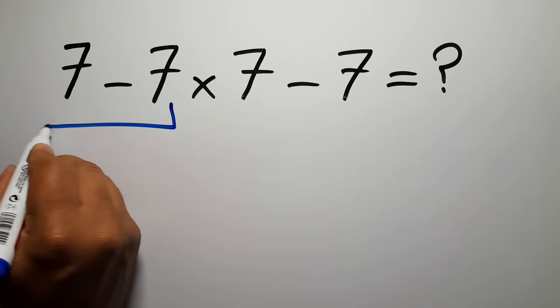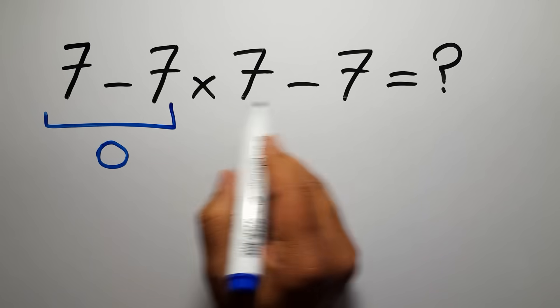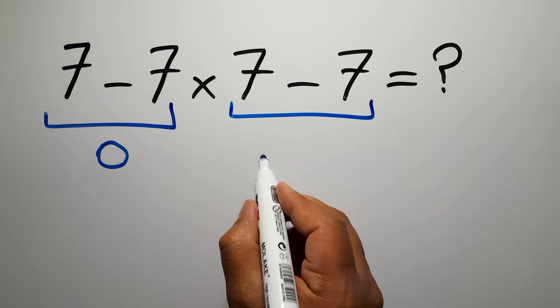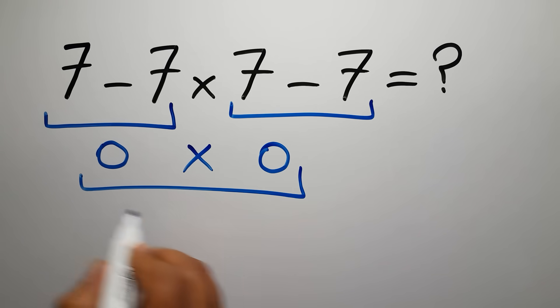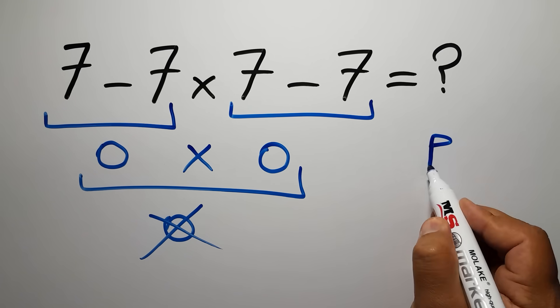7 minus 7 is just 0, and again here we have 7 minus 7, so 0 times 0 which equals 0. But this answer is not correct because according to the order of operations, first we have to do parentheses.